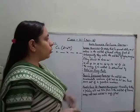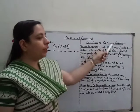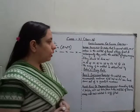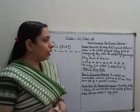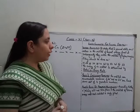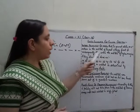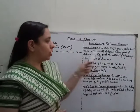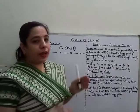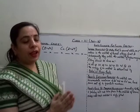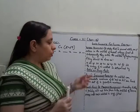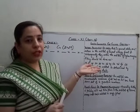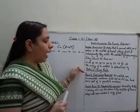Today we are going to discuss the rules which are to be followed for filling the orbitals. The first rule is the Aufbau principle. It states that in the ground state, an electron enters the orbital of lowest energy first and subsequently enters orbitals of higher energies. According to Bohr's Bury rule, using the n+l rule, we get the sequence of orbitals in the increasing order of their energies.